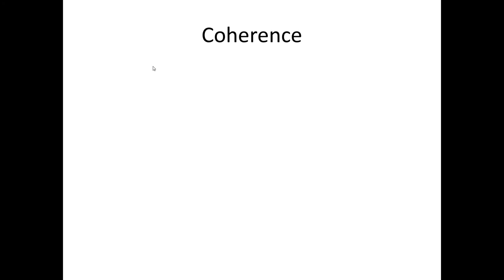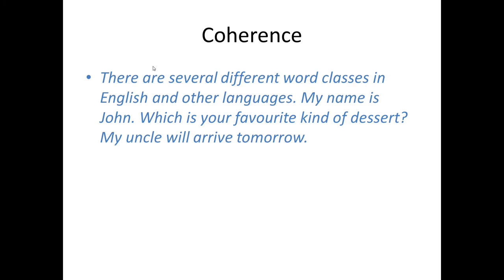You can't just put a random collection of sentences together to produce a meaningful text. For example, the following is not a good text: 'There are several different word classes in English and other languages. My name is John. Which is your favourite kind of dessert? My uncle will arrive tomorrow.' What's wrong with this piece of text? It doesn't seem to be about anything. The individual sentences don't seem to have anything to do with each other.